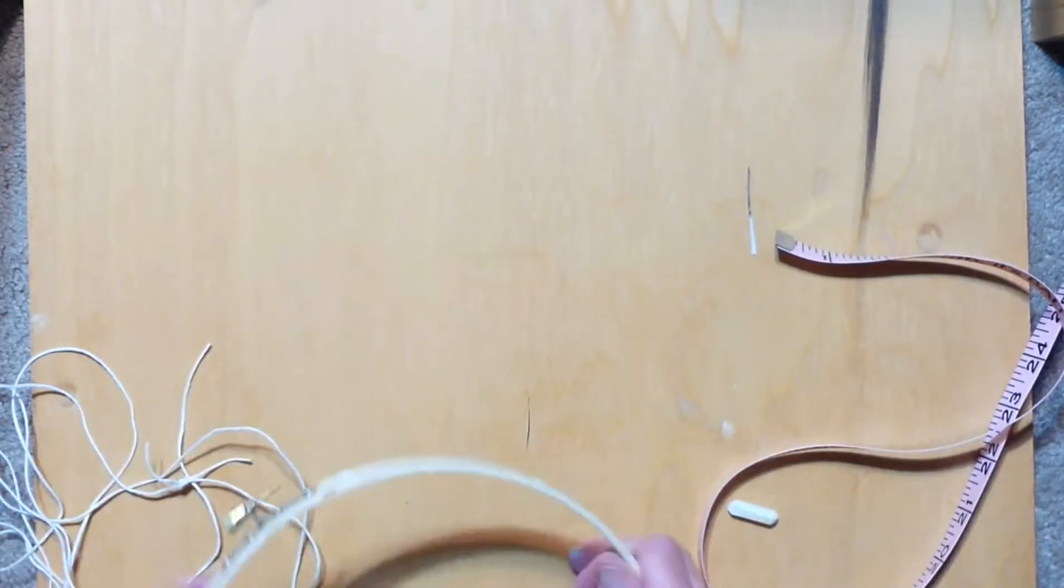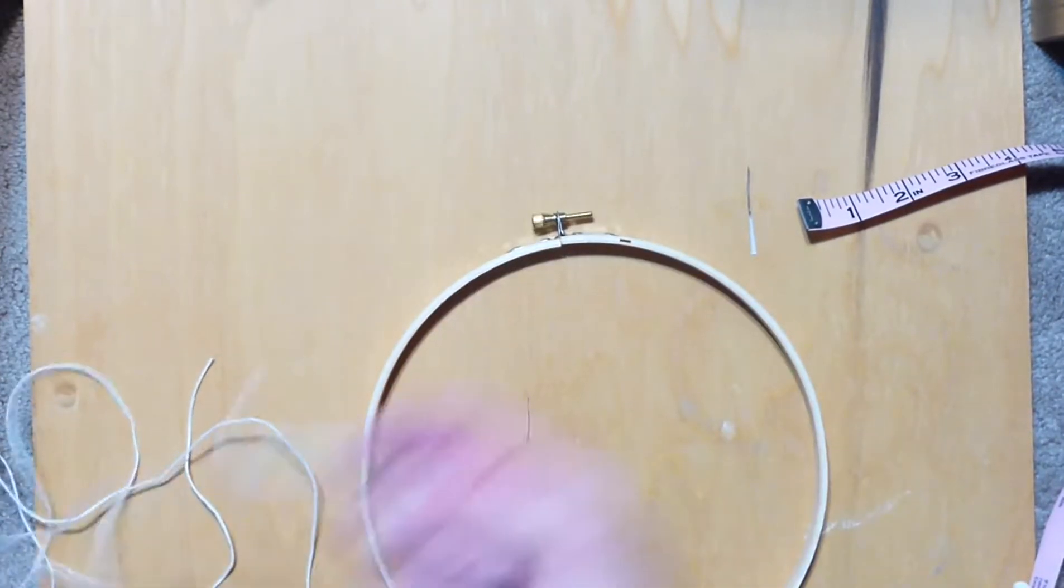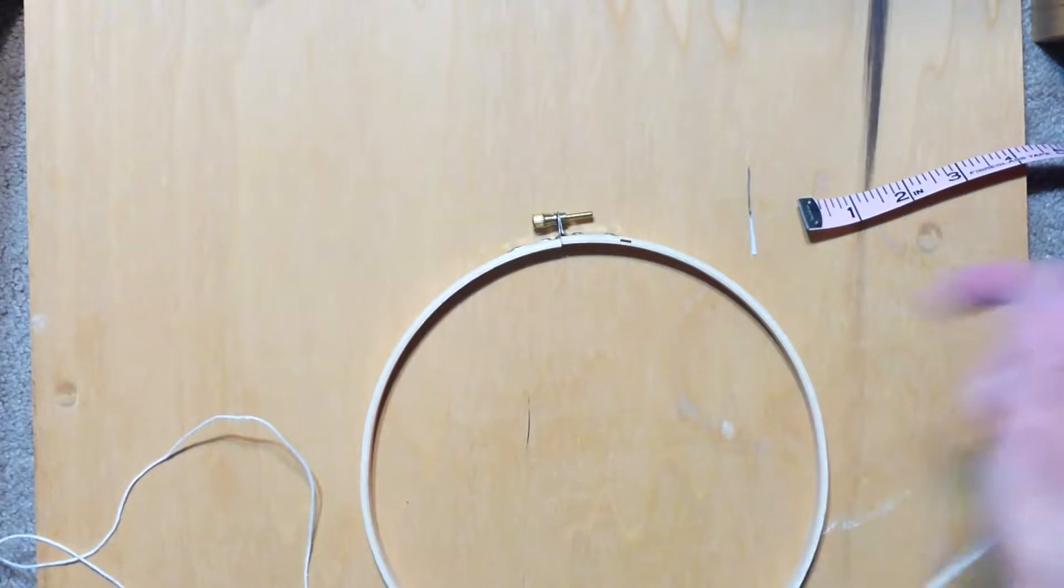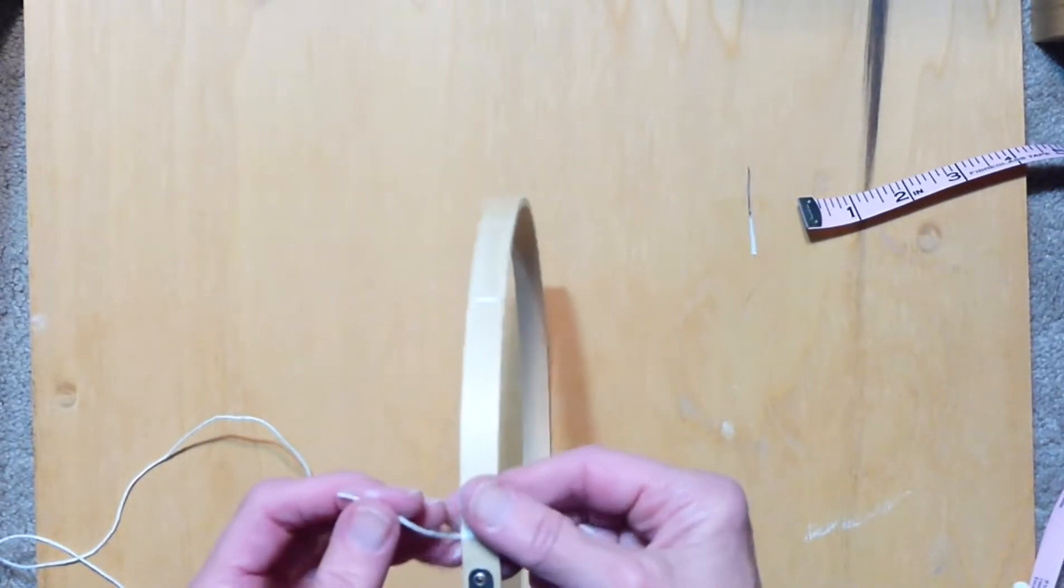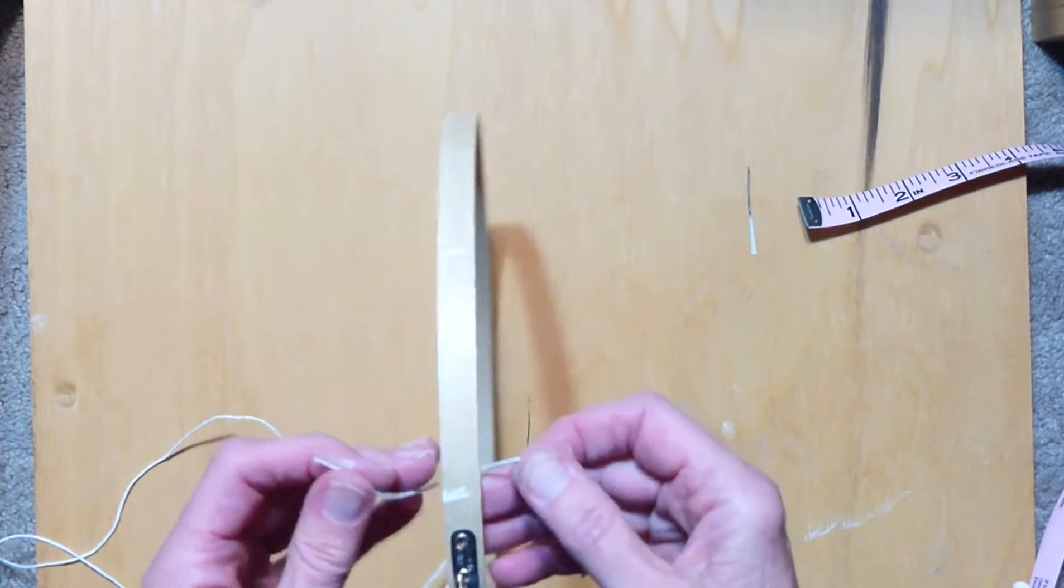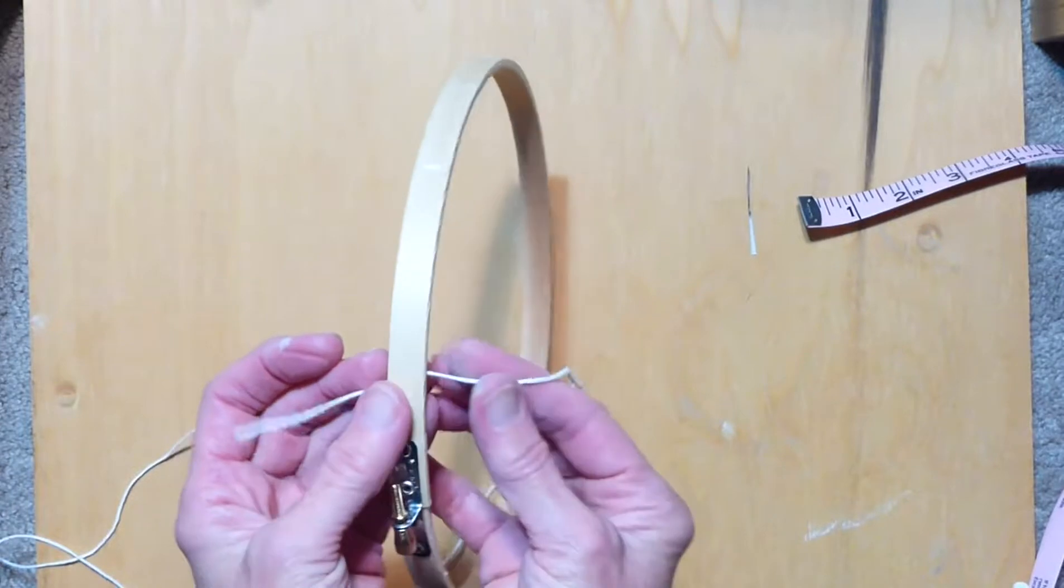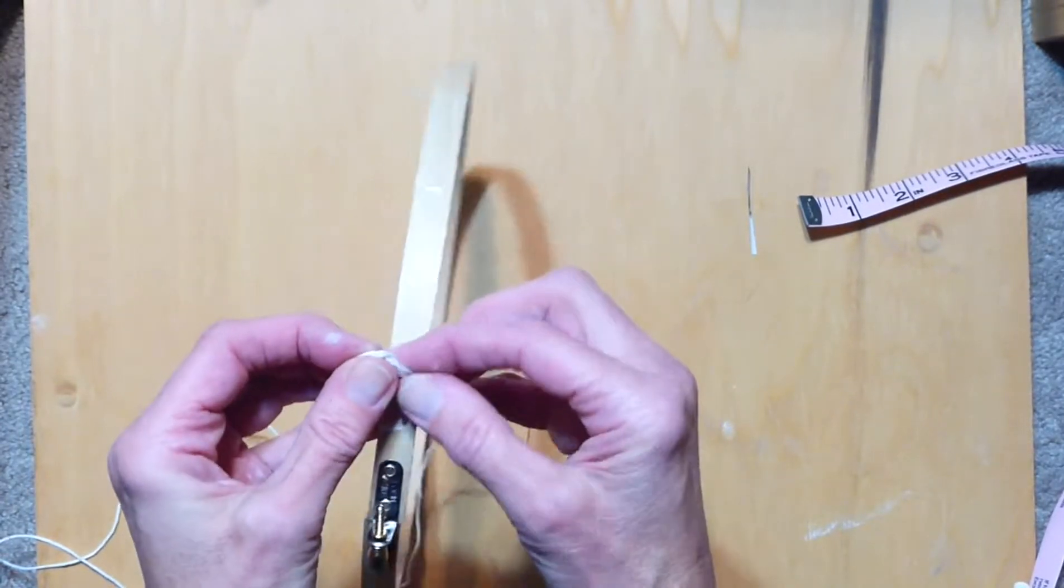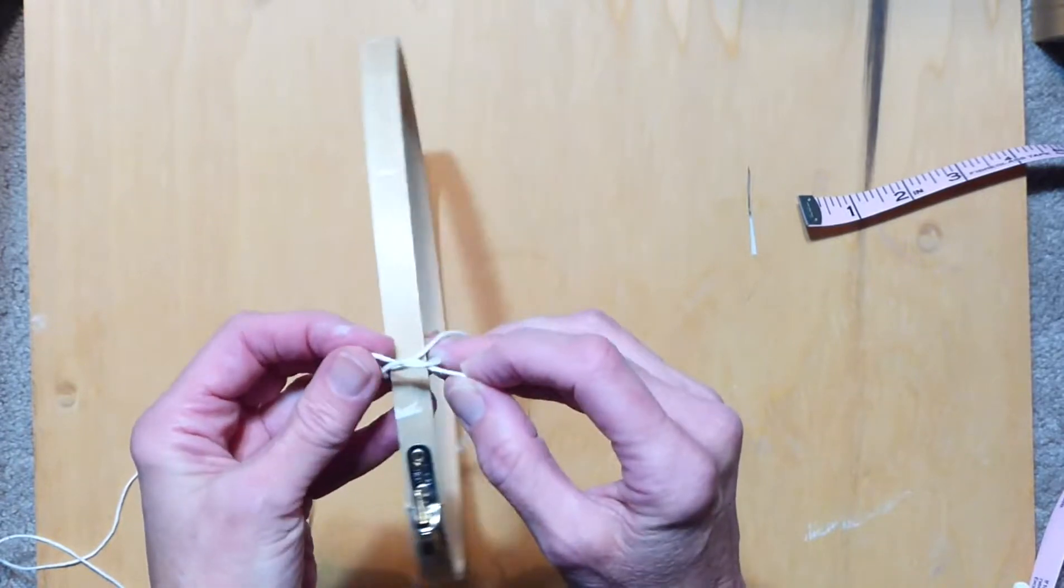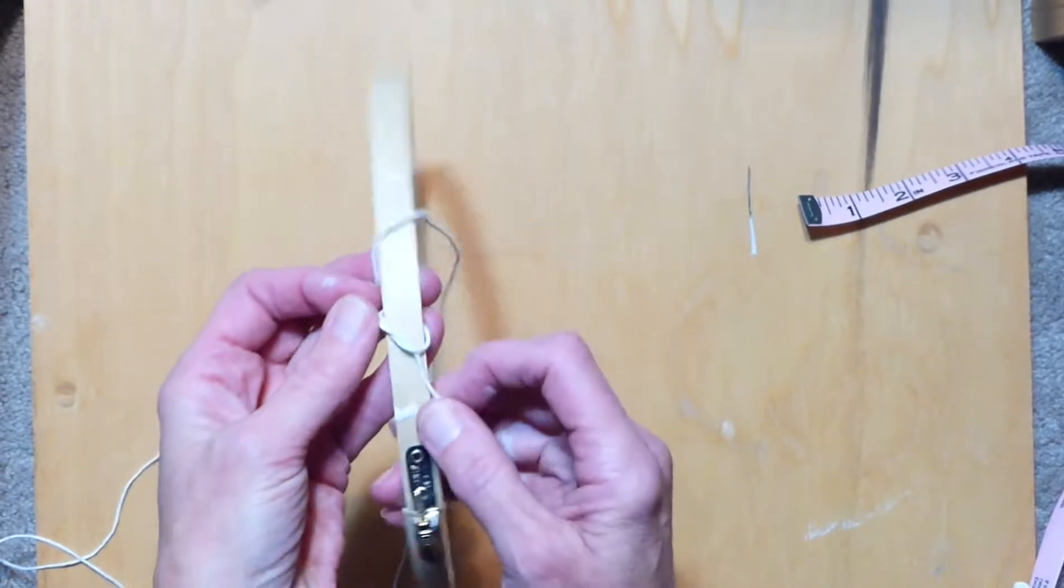I've marked off eight individual areas and the first thing I want to do is make a square knot. So the way you make a square knot is you start with a piece on each side, you cross the left over the right.